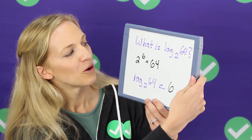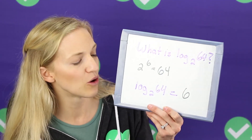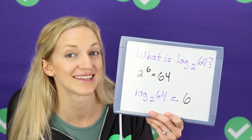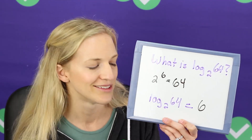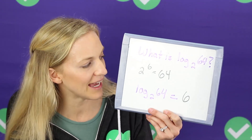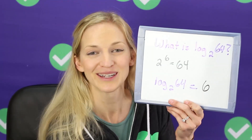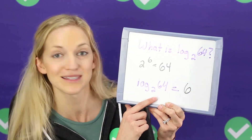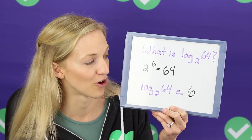Let's take a look at a quick example. What is log base two of 64? We need to figure out what power do I need to raise two to to get 64? If you multiplied two times two times two times two times two times two — two to the six — that gives you 64. So that means that log base two of 64 equals six. And that is our answer for that equation.